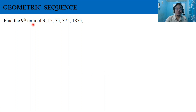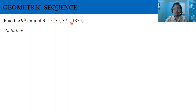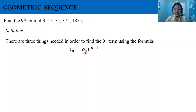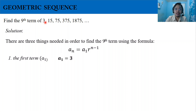For our first example, find the ninth term of the sequence 3, 15, 75, 375, 1875. To use the formula a sub n equals a sub 1 times r raised to n minus 1, we first identify the first term. Obviously, the first term is 3, so a sub 1 equals 3.